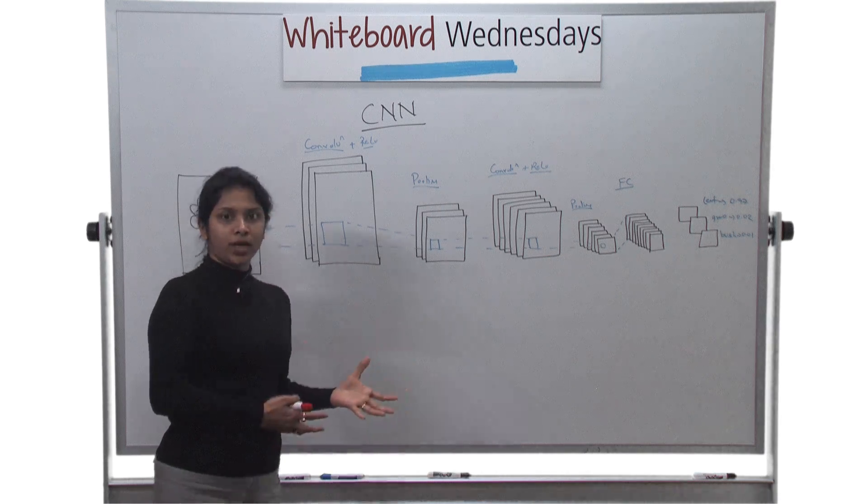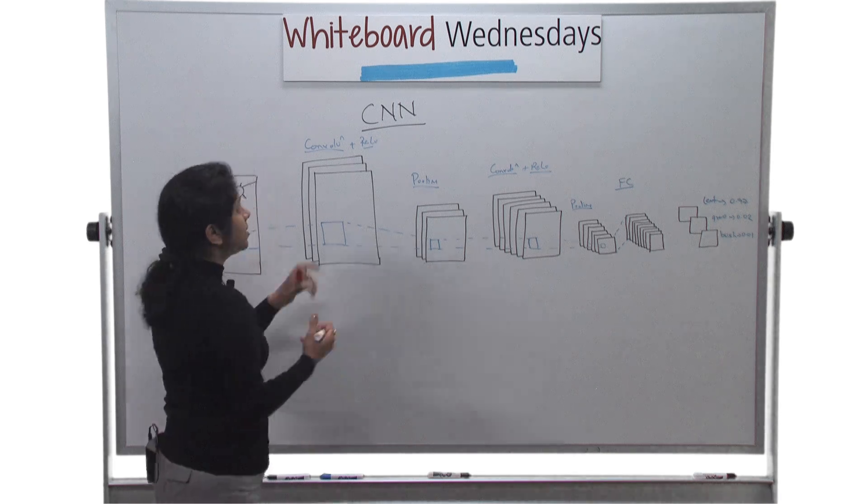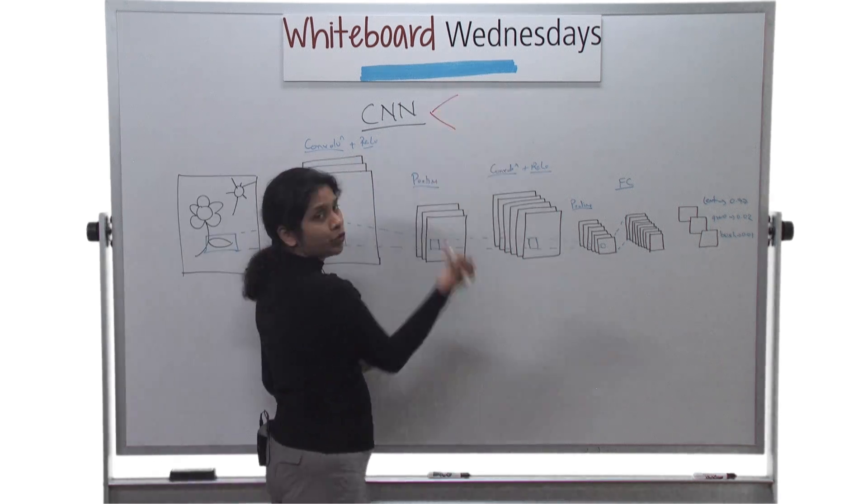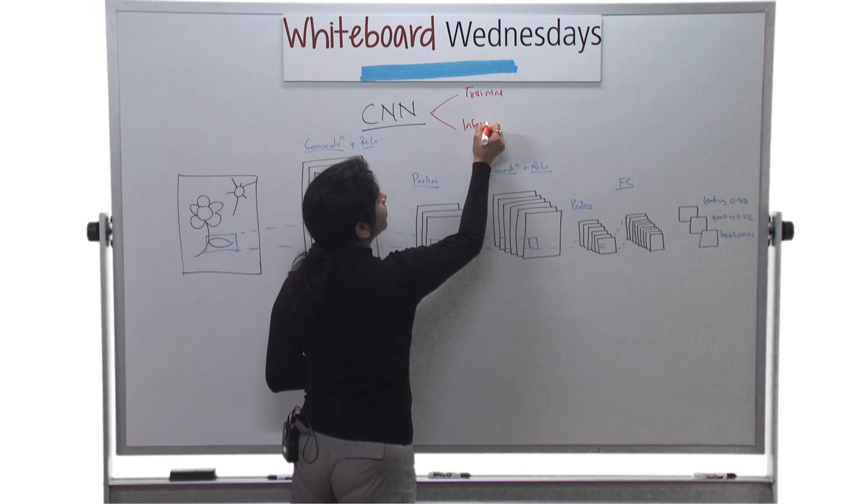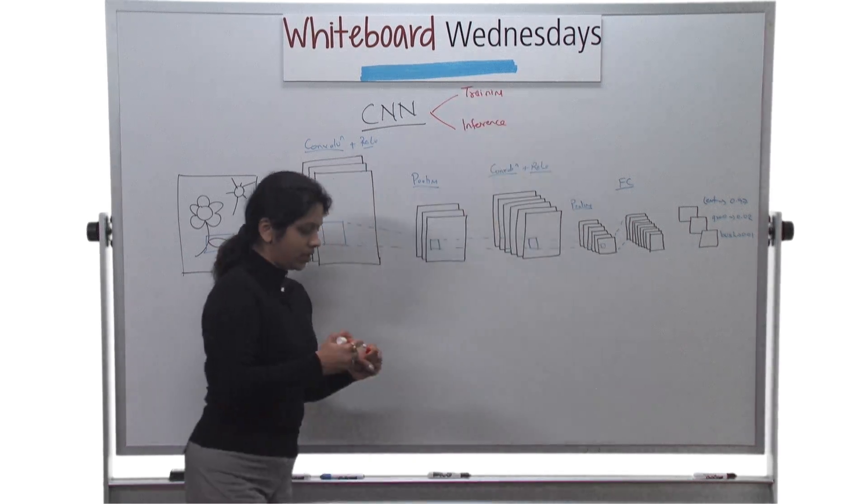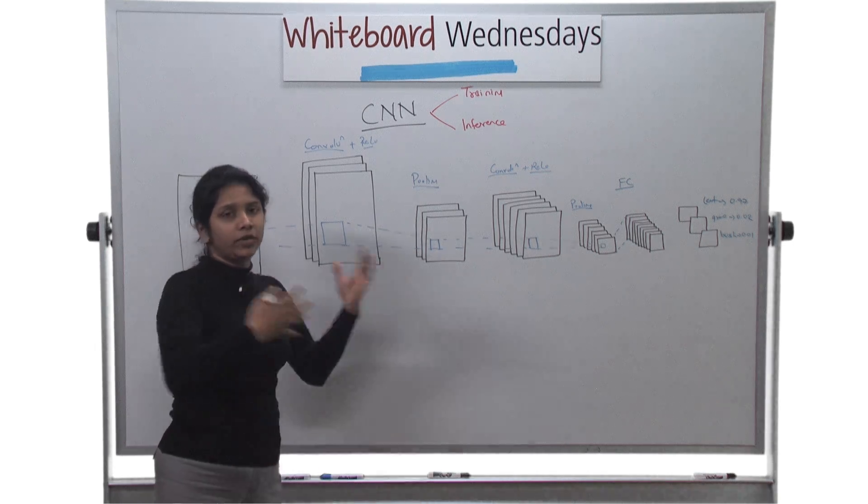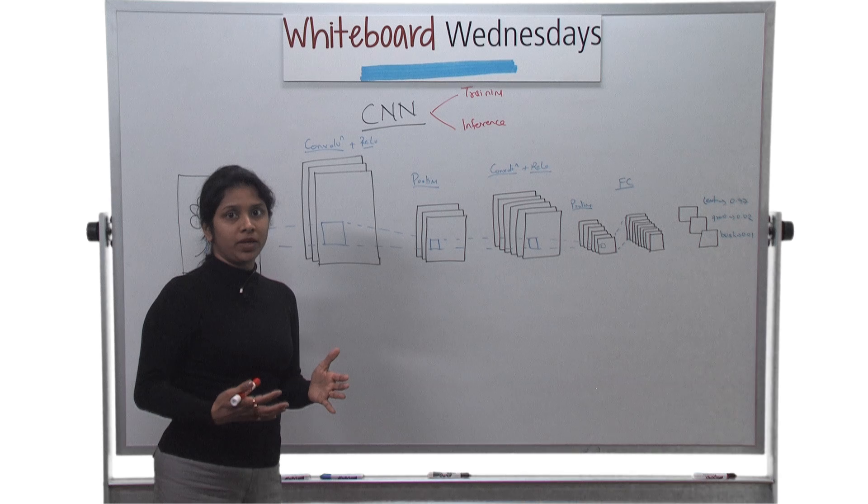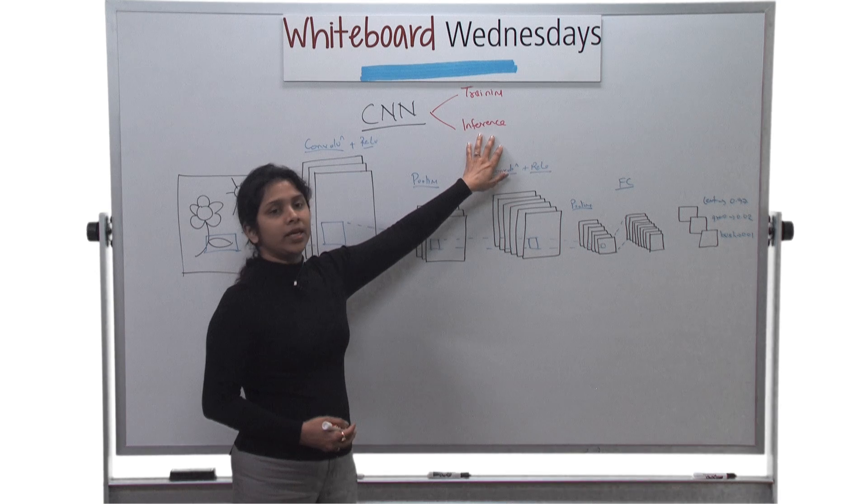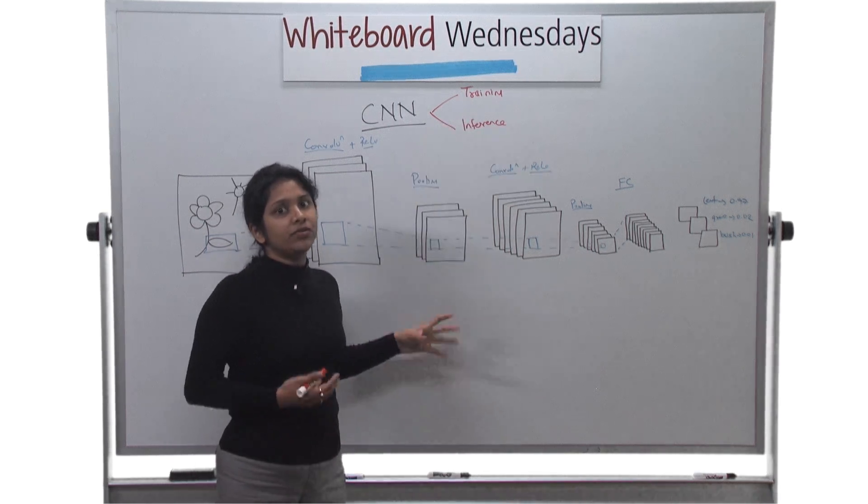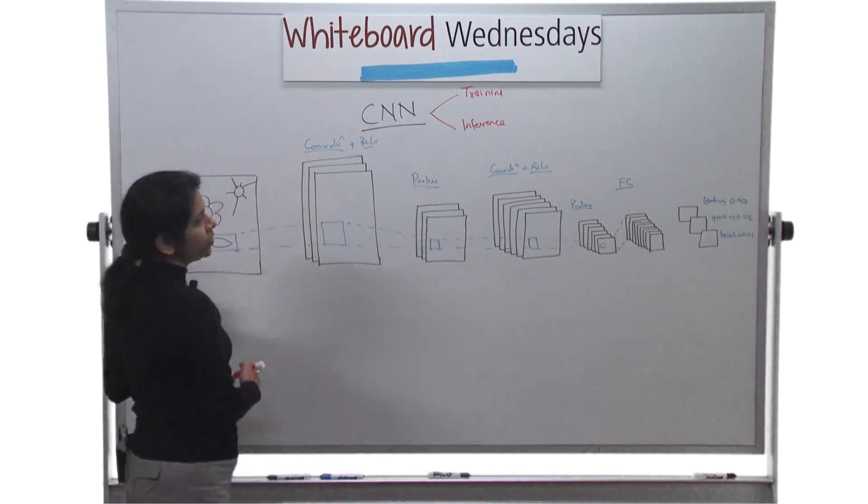Before I go into the architecture or the layers, I want to talk briefly about two things. CNN can be in two phases: there could be a training phase or there could be an inference phase. Training phase is the more involved phase where we are taking in a lot of data as input and going through a feedback pattern and creating these filter data sets which are then used for the inference phase, which we will be going into more detail because inference is something which we do in real-time application.